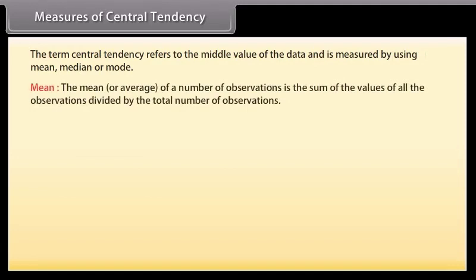The mean or average of a number of observations is the sum of the values of all the observations divided by the total number of observations. It is denoted by this symbol, read as x bar.